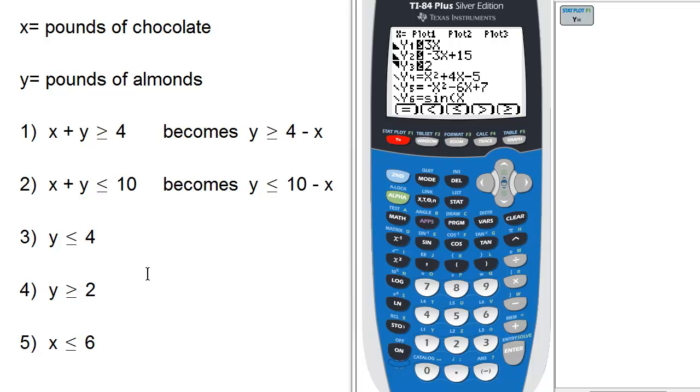The first one is x plus y is greater than or equal to 4. So for us, we want that to become y, in this case y1, greater than or equal to 4 minus x. So I'll do that right now. Notice the y1, we can change that inequality by pressing alpha and f5 for greater than or equal to. And then scrolling over to the right, make that 4 minus x.